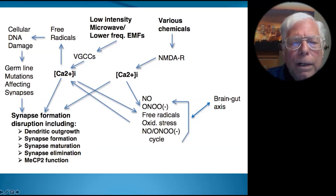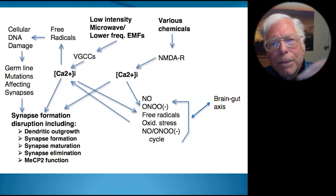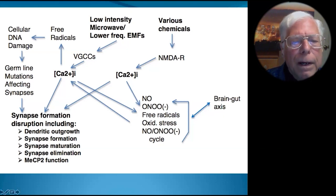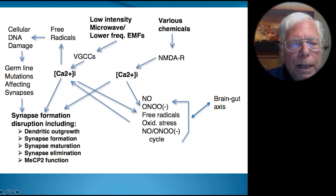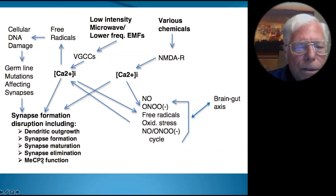Everything in the brain is dependent on the proper formation of synapses between certain neurons and other neurons they're supposed to respond to. There are five mechanisms involved in the formation of those synapses: dendritic outgrowth of the neurons, synapse formation, synapse maturation, synapse elimination, and something called MCP2 function.